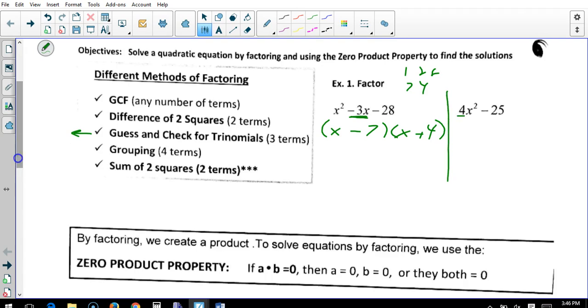Here, I have perfect square, perfect square, perfect square. That's the difference of two squares. So you need square root of the first term, square root of the variable. I'll put it there. Square root of the second term. One plus, one minus.